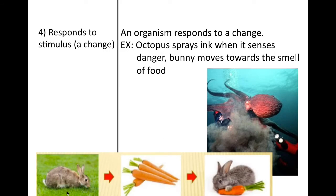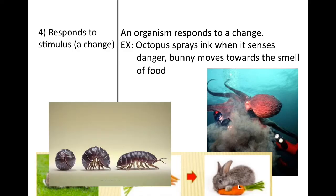Another example is bunny rabbits, or many different animals. When an animal senses and smells food — like these carrots or any other food — they will move towards it. Here we have a roly-poly, a little insect. If you were to touch this insect with your finger, it would roll up in response to that stimulus. So the stimulus in that case was touch.